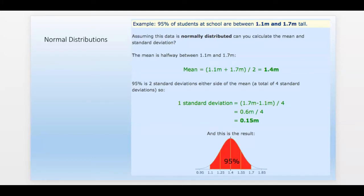There's an example here quick. 95% of students at a school are between 1.1 meter and 1.7 meters tall. And if it's normally distributed, you can calculate the mean and the standard deviation. The mean is pretty easy, it's halfway between those two. You can add them up and divide by two. So the mean is 1.4.